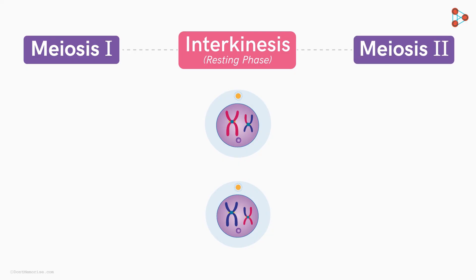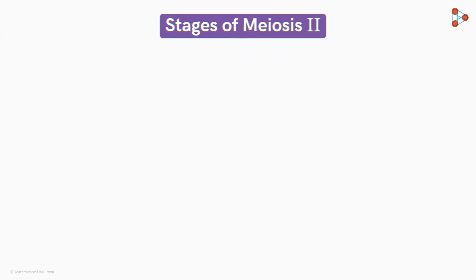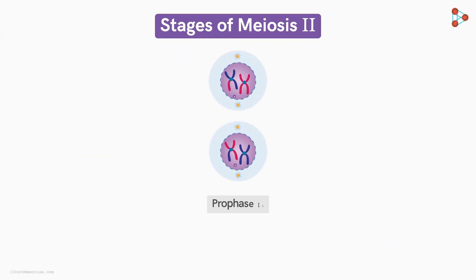Meiosis II also includes four stages. In other words, meiosis II can be considered as the mitosis of haploid cells. The first phase is prophase II, where the nuclear membrane and the nucleolus begin disappearing.